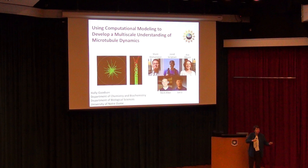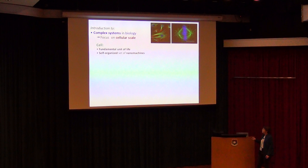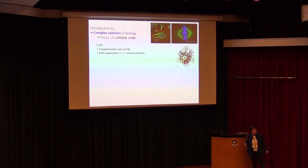I want to give you an introduction to complex systems and biology with a focus on the cellular scale. The cell, as many of you know, is the fundamental unit of life, but I think it's really important to think about it as a self-organized set of nanomachines. This happens to be one example of the machine that's making ATP — the chemical energy that allows your muscles and your brain to work.